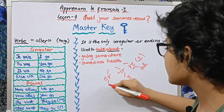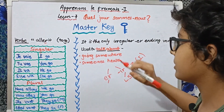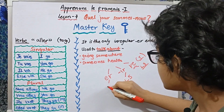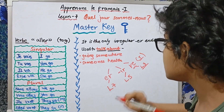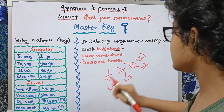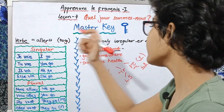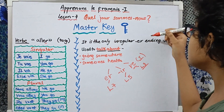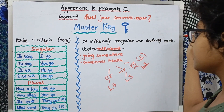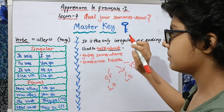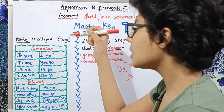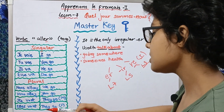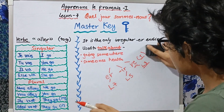Today we are going to do the ER irregular verb. Aller is the only irregular verb in the ER ending group — it is the only ER verb to be irregular. Now let us read the conjugation.